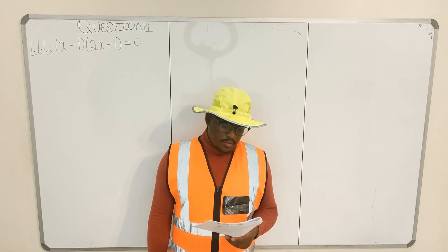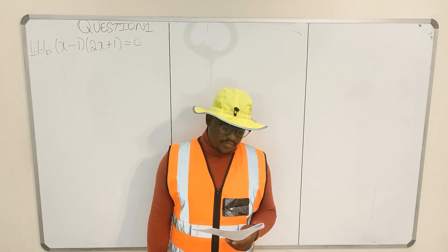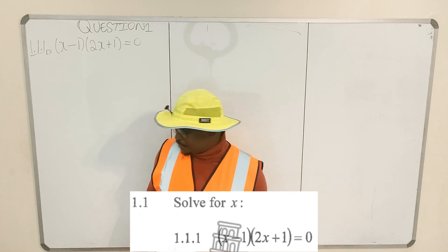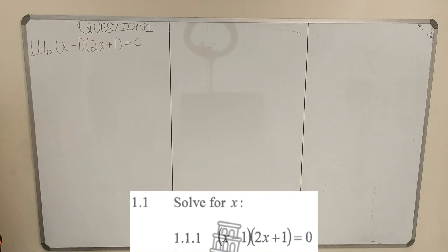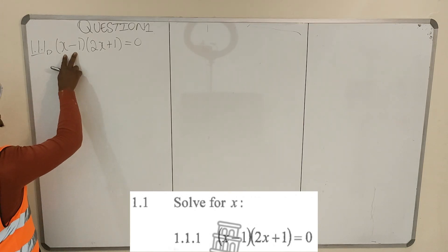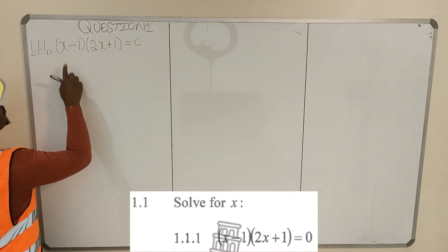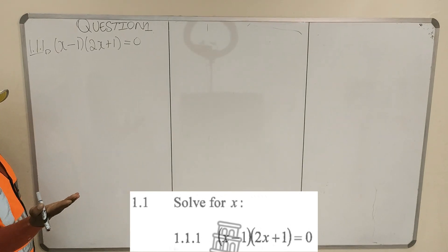So question 1 — 1.1.1 to 1.1.4 is solve for x. You are given 4 equations to solve. This is the first one, and this is the dream situation. You wish they give you something like this all the time. They are saying this bracket times this bracket is equal to 0.